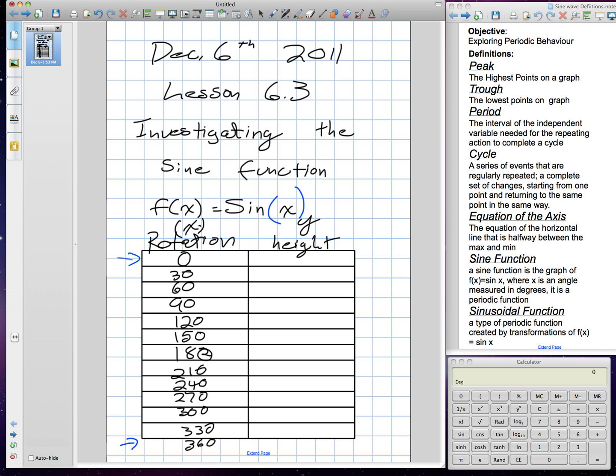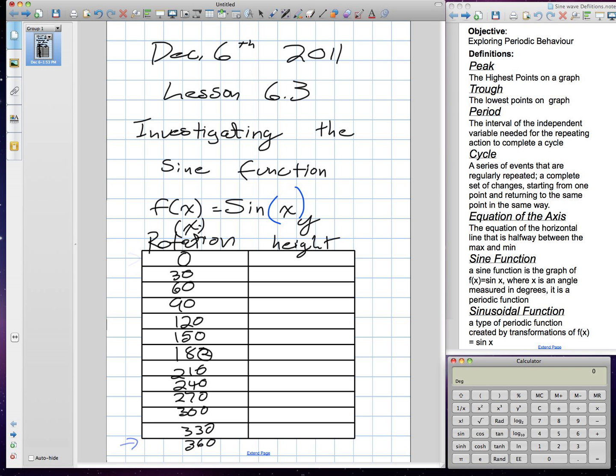I want you to plug those in for our x. For instance, the very first one, I would have 0. The function of sine is 0. So, our height is 0 at that point. When I do 30, sine, 0.5. I want you guys to fill out this chart all the way to 360 degrees.